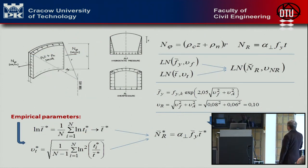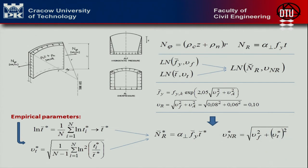According to our analysis, two basic random variables are specified and compared to each other. The first is the variable action effect, interpreted here as a tensile force in a steel shell, which is a function of the random hydrostatic pressure and the random overpressure. In this function, the radius of the shell R is treated as a fully deterministic parameter. Both loads appear to be quantities capable of being monitored, even continuously, not only during technical inspection.